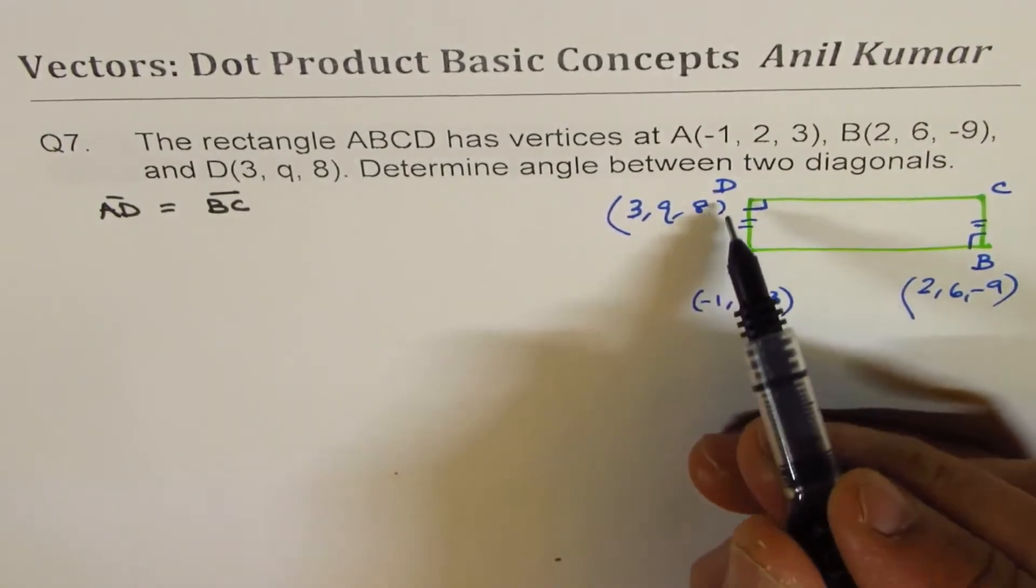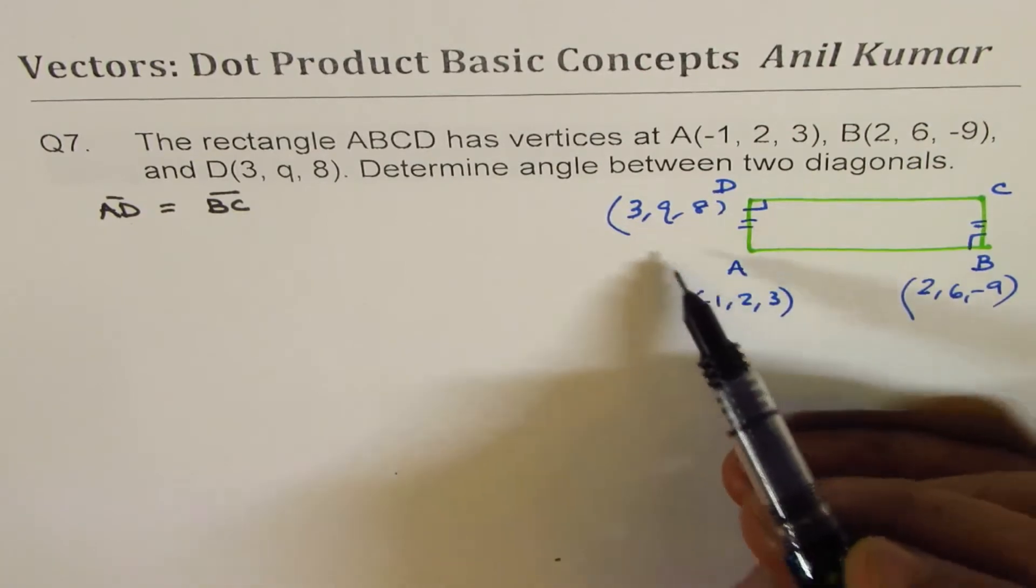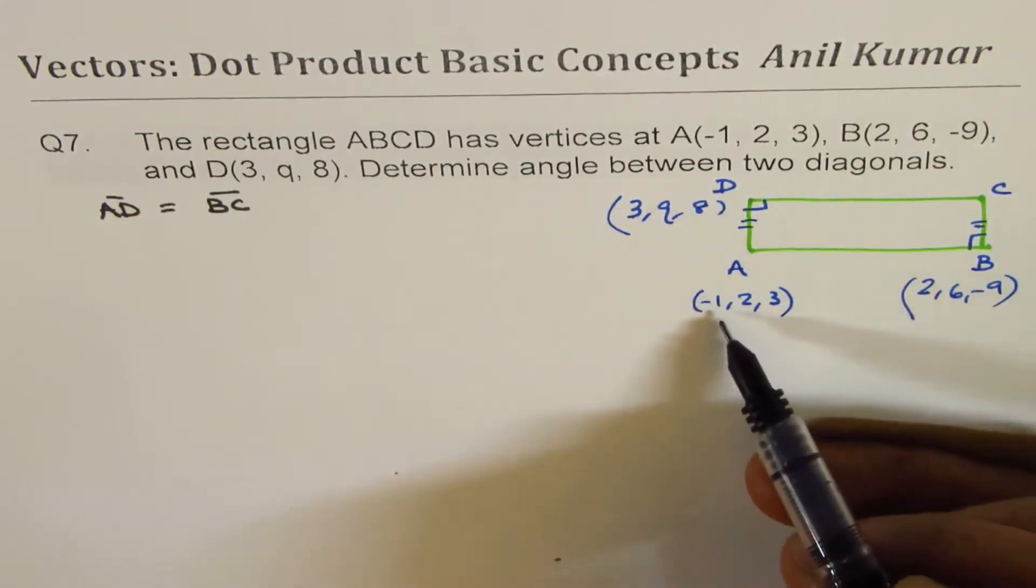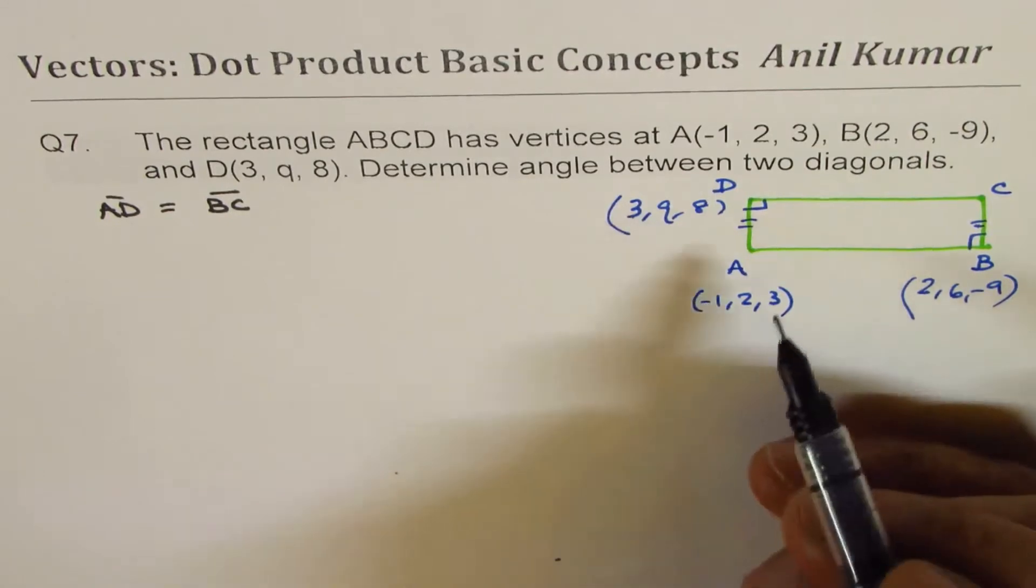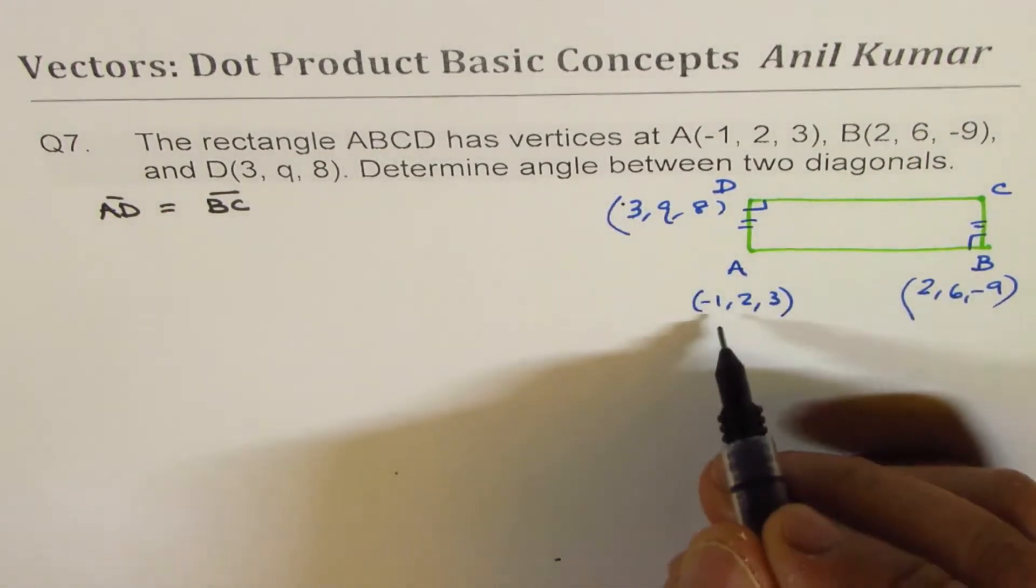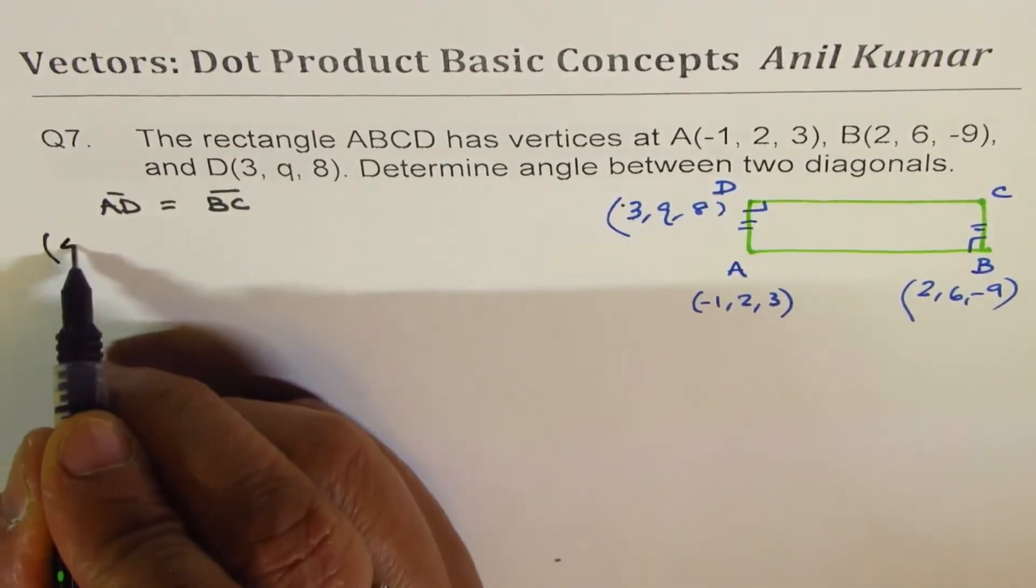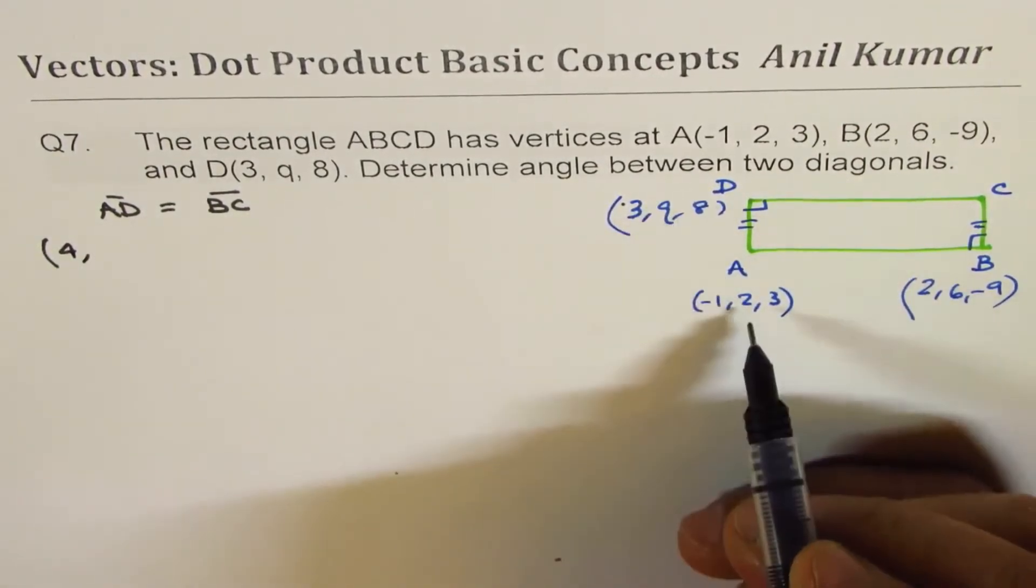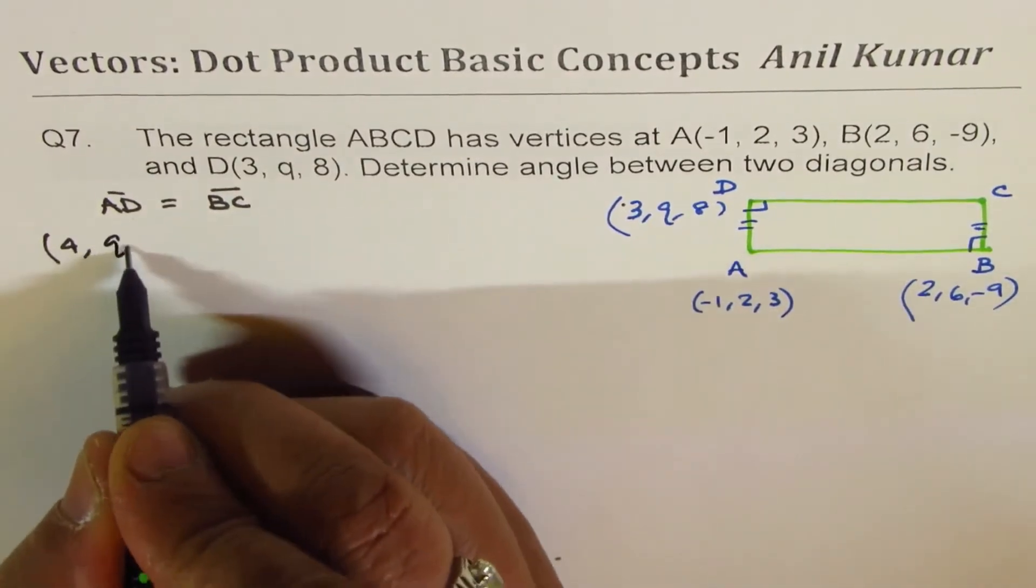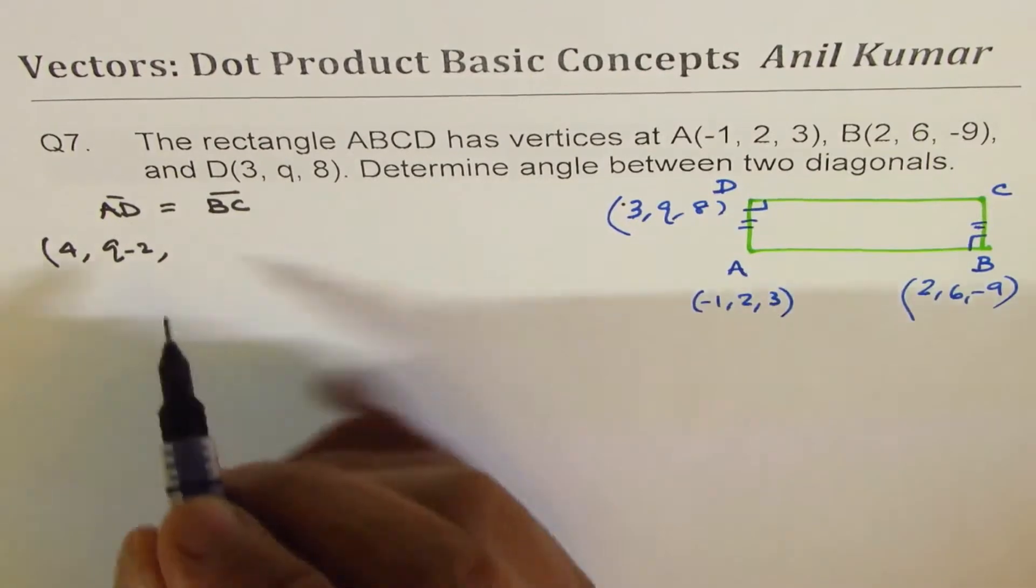Now if you see AD, basically how do you get 3 from -1? You add 4. So if you see AD, it is this minus this, which is (4, Q-2, 5).